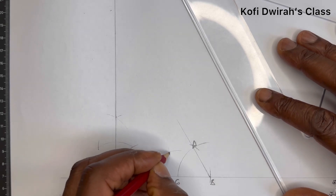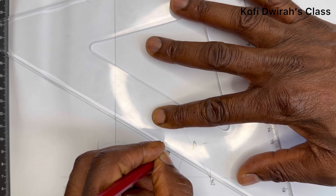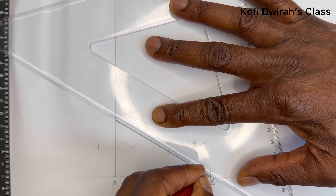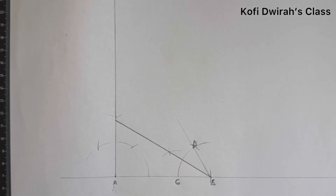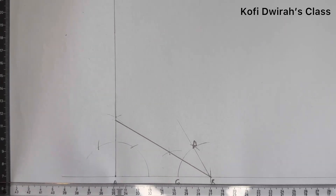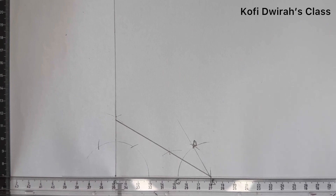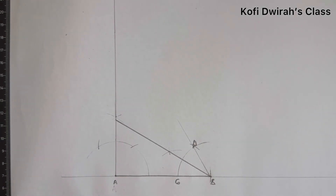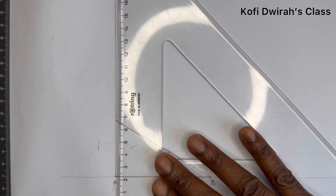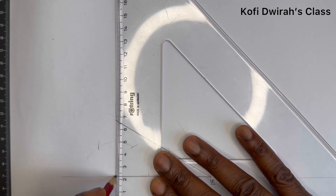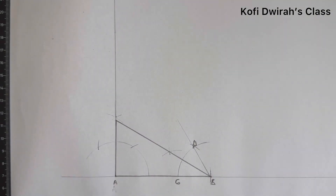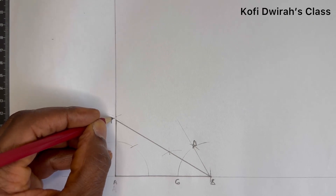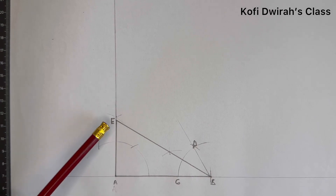Draw the line from point B and it goes like this. With our T-square, we can draw the adjacent and the opposite. Let this point be point E — so we have our triangle with vertices E, A, and B.